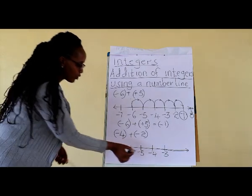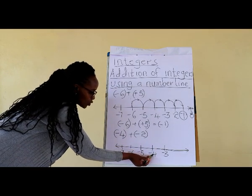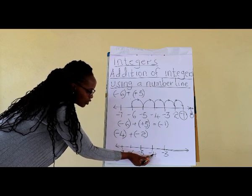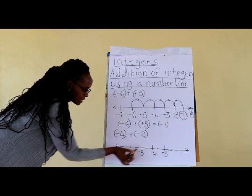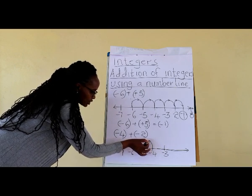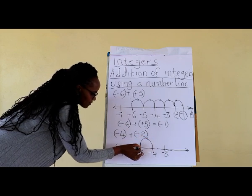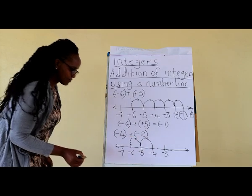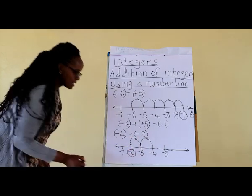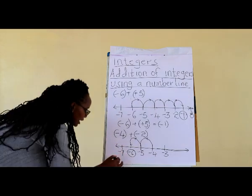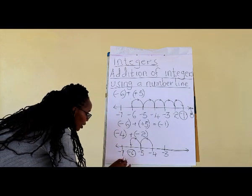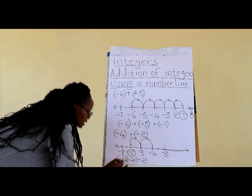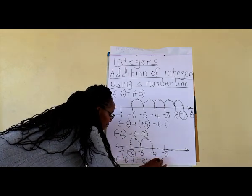Our starting point is negative 4. To add a negative integer, we move to the left of the number line. We move 1 and 2 steps to the left. Therefore, our answer is negative 6. Negative 4 plus negative 2 gives us negative 6.